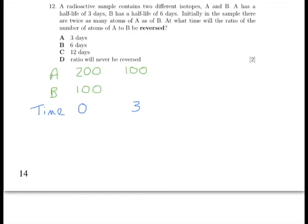So we'll skip ahead to day six, where we know that sample B will have halved because sample B's half-life is six days. So sample B will be down to 50. However, at the same time, in those subsequent three days between day three and day six, sample A will have halved again because its half-life is three days. So it will be down to 50 atoms.